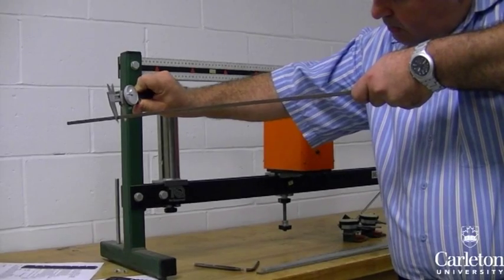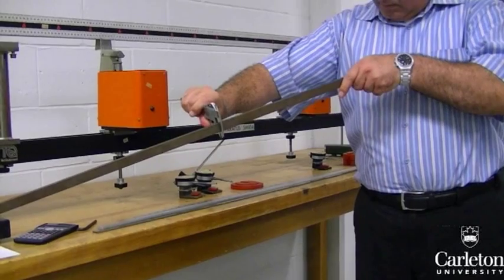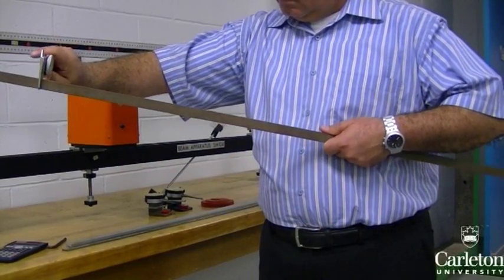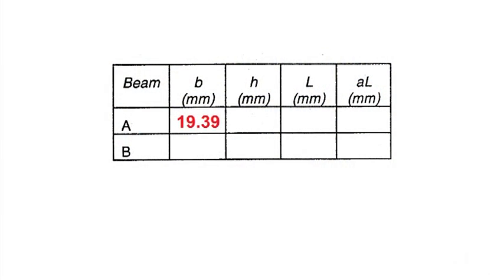The first step is to accurately measure the dimensions of this beam. Use calipers and record the width, or B, as well as the thickness, or H, at 5 points along the length of the beam. Calculate the average value, discarding any obvious outliers.